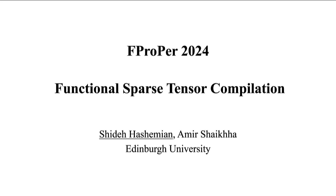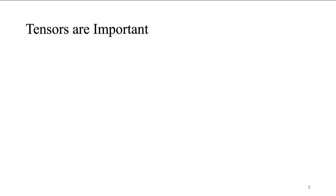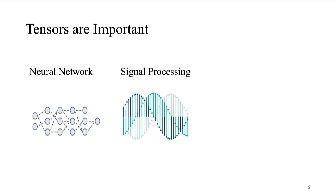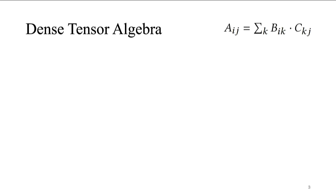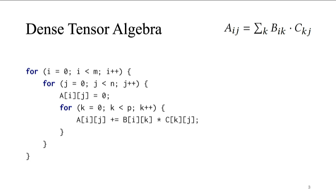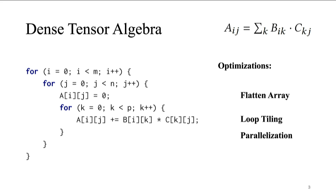I'm going to talk about functional sparse tensor compilation. Tensors are important in general. We have seen them in lots of applications, such as neural networks, signal processing, and social network analysis. Let's see what dense tensor computation looks like. This is an example of code that computes the dense matrix-matrix multiplication, which looks really simple and is open to lots of optimizations, such as flattened array used as a data structure optimization for dense data, and also loop tiling and parallelization.